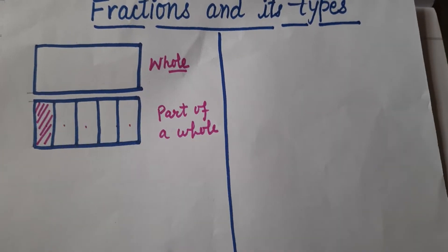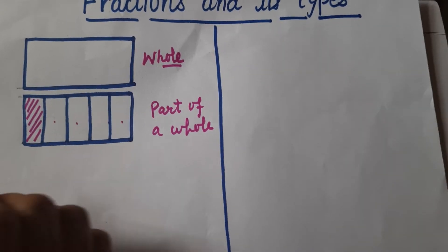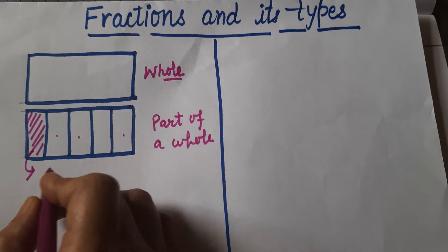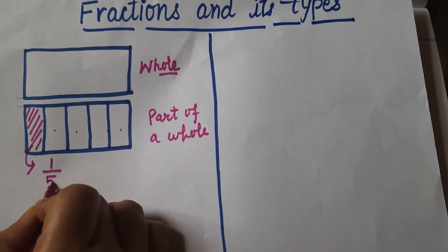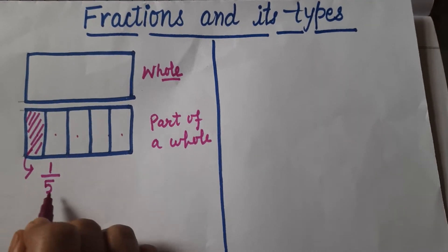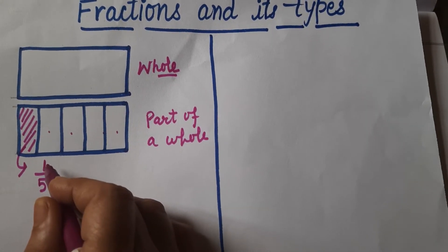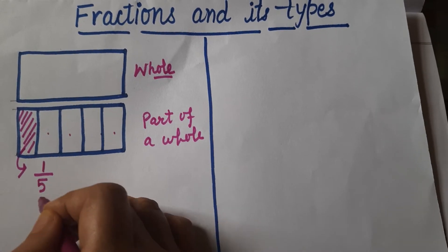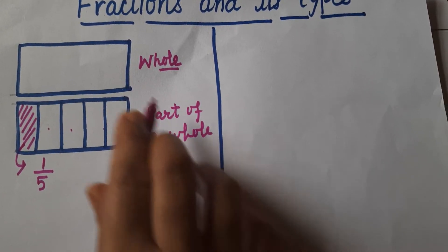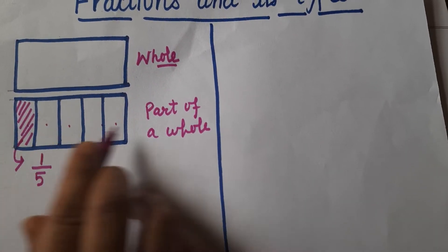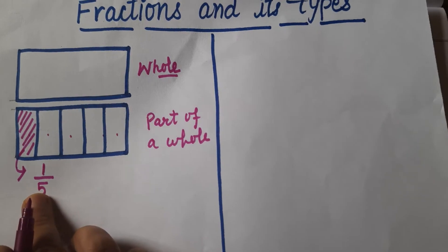I have shaded here the first part. Out of the five parts, one part is shaded. So how can we write this part as a fraction? One is the shaded part — I have taken one out of five. The total parts I have are five, so on the downside I write the total parts, which is five, and on the upside I write the shaded part, which is one. So this number, one by five, is known as a fraction — a part of a whole. We have taken one part out of five.